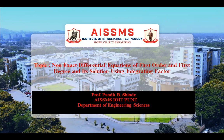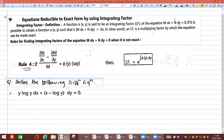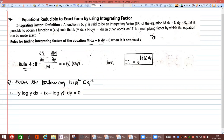There are a few rules for this. Today we discuss Rule 4. Rule 4 says: if (∂N/∂x − ∂M/∂y) divided by M equals a function of y only — that is, φ(y) — then the integrating factor is e raised to the integral of φ(y) dy.